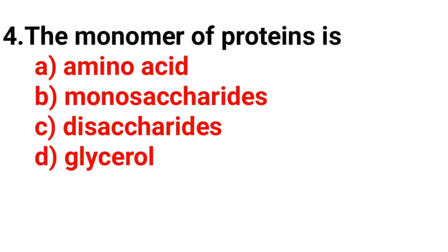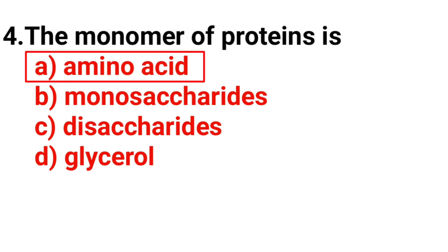Question number four: The monomer of proteins is — the answer is option A, amino acid.